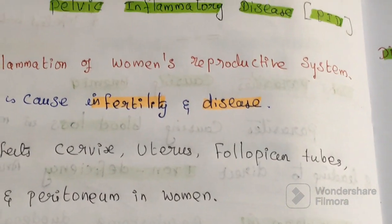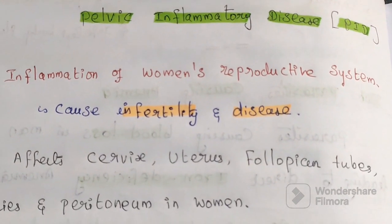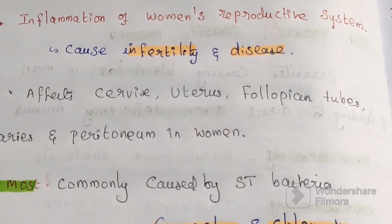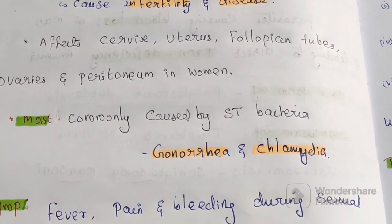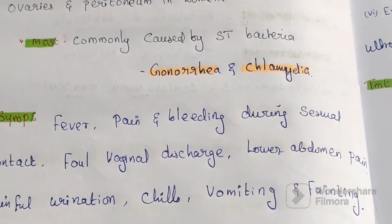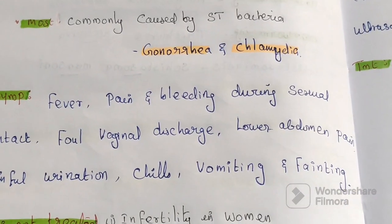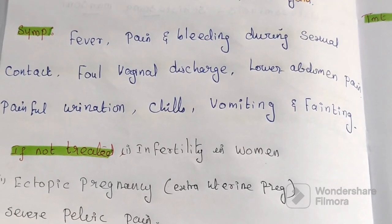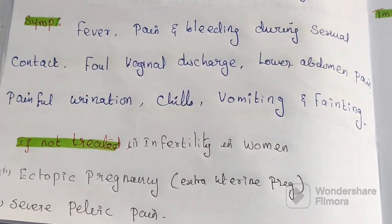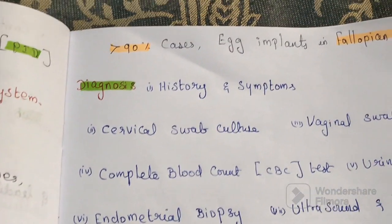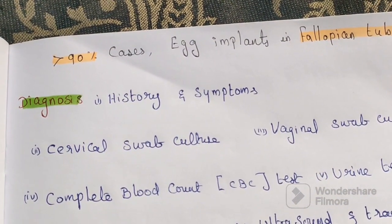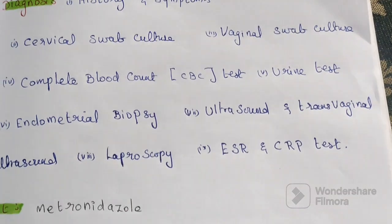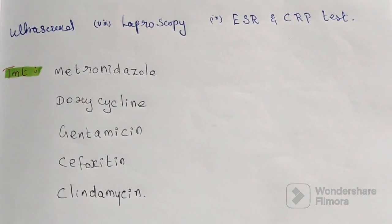In this video, we discussed pelvic inflammatory disease. It causes infertility and severe diseases in the women's reproductive system. It mainly affects the cervix, uterus, and fallopian tube, and is caused mainly by the bacteria gonorrhea and chlamydia. If treatment is not taken, it causes infertility, ectopic pregnancy, and in 90% of cases the egg implants in the fallopian tube. Thanks for watching.